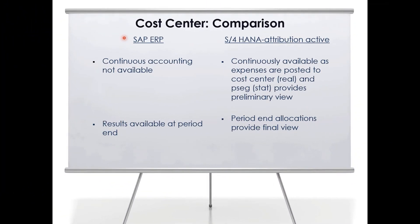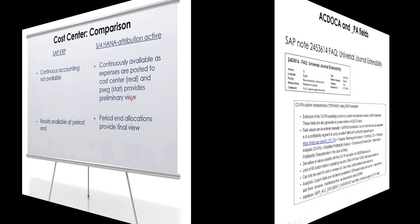To wrap up the cost center scenario: in SAP ERP, continuous accounting was not available. But in S/4 HANA, if we activate attribution, we can derive dimensions or characteristics from cost centers as postings occur in real time.